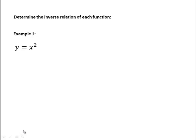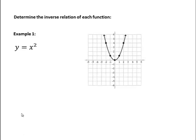If we were asked to determine the inverse relation of the function y equals x squared, it might be helpful to consider the graph of that, which would be this parabola. Notice its vertex is at 0, 0, and we can find other points on that parabola by simply plugging in some x values.